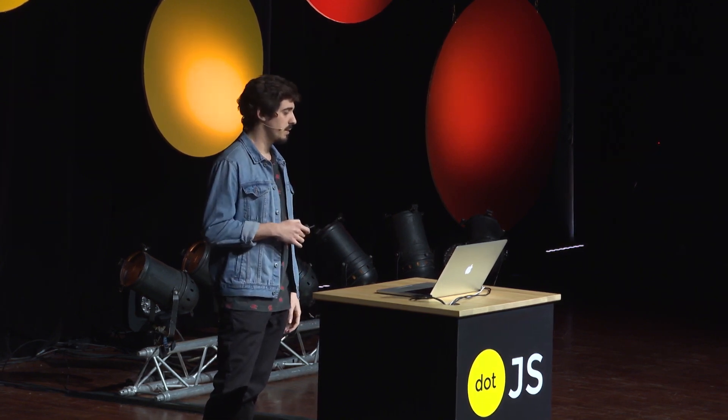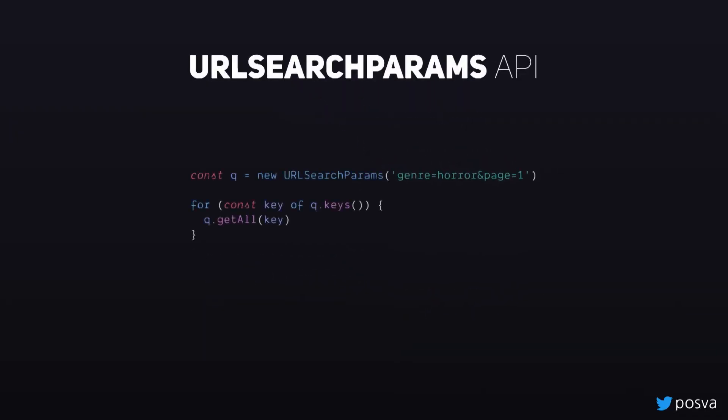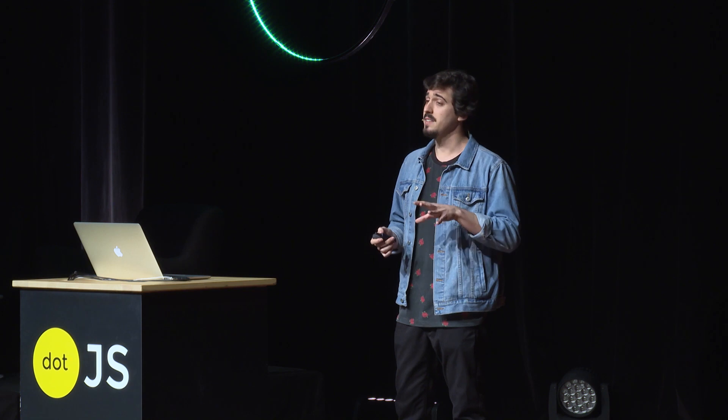How do we go from the string into an object we can use? More specifically, how do we transform the query into an object we can manipulate? Because the path is going to be a string and the hash is going to be a string — that's fine. But what about the query? So we have this API: the URLSearchParams API.